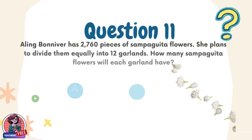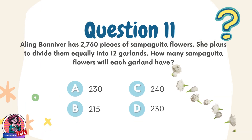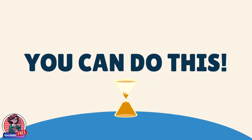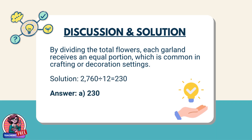Question 11. Aling Pranadar has 2,760 pieces of sampaguita flowers. She plans to divide them equally into 12 garlands. How many sampaguita flowers will each garland have? Choices: A. 230, B. 215, C. 240, D. 230. Discussion: By dividing the total flowers, each garland receives an equal portion, which is common in crafting or decoration settings. Solution: 2,760 ÷ 12 = 230. Answer: A. 230.